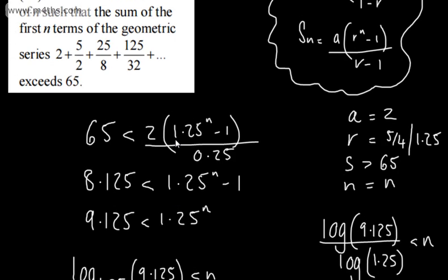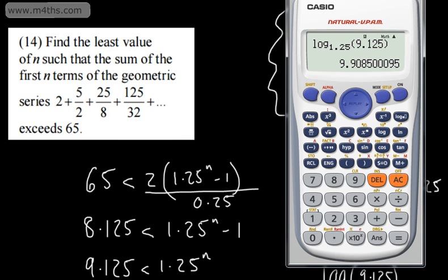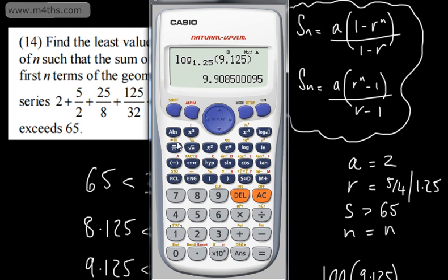If you wanted to check that, we can go ahead and just plug in at any point, just to check that that is logical. For example, let's just set this up. a is 2, so 2, and then we've got 1.25 to the power. If we did it to the power of 9, and then we subtracted 1, and divided this now by 0.25, this should give us now something less than 65, 51.6.